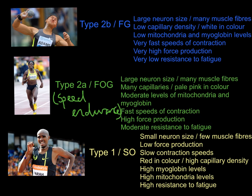Finally, Type 2b — fast glycolytic (FG) fibers — are the most explosive muscle fibers. Like Type 2a, they have large neuron size with many muscle fibers. However, these fibers have very low capillary density — virtually no blood supply — and appear white in color. They have very low levels of mitochondria and myoglobin, so they are not for endurance events at all. They have very fast speeds of contraction and very high force production, but a very low resistance to fatigue — they tire up very quickly.